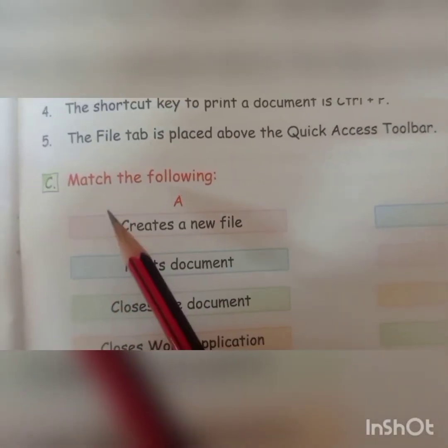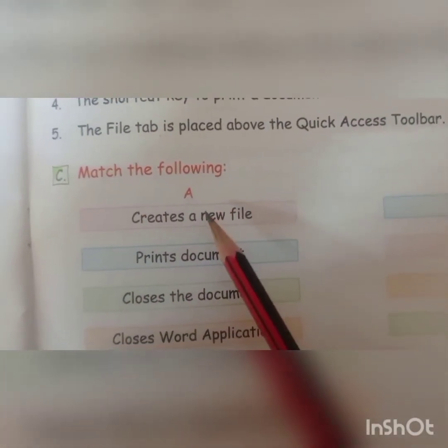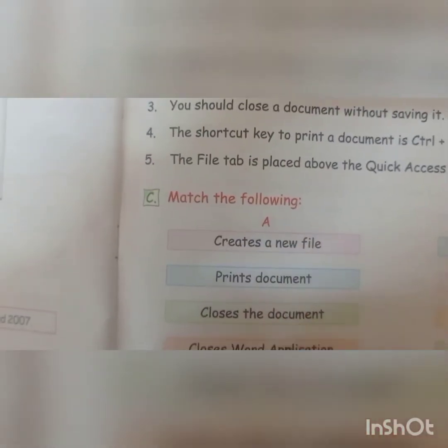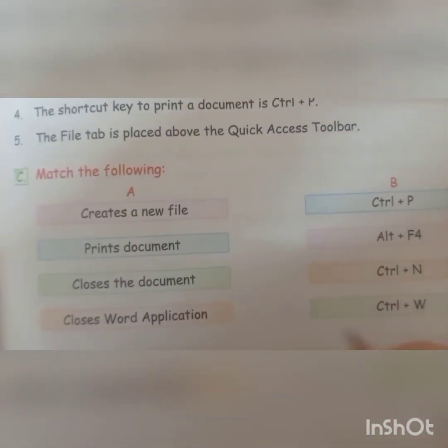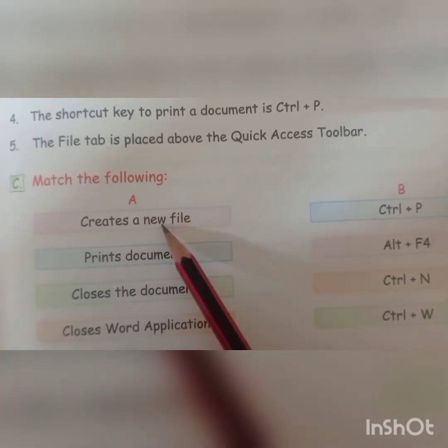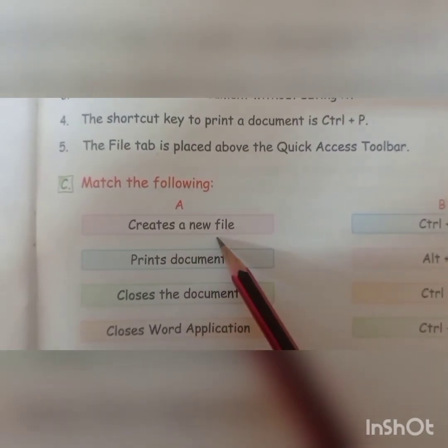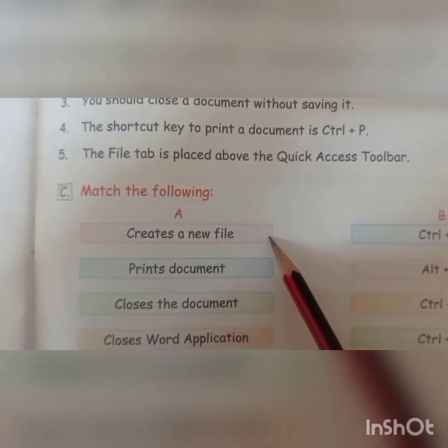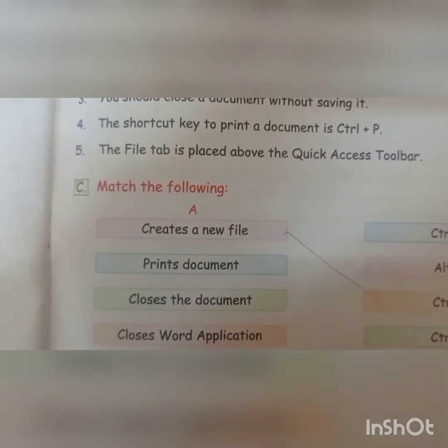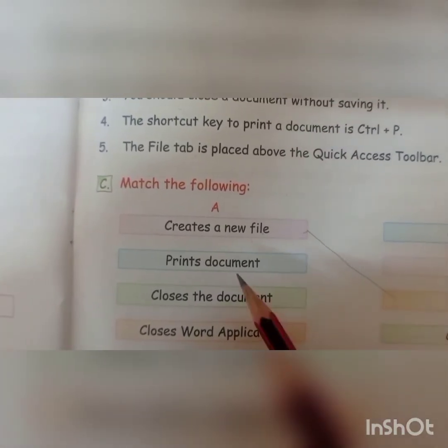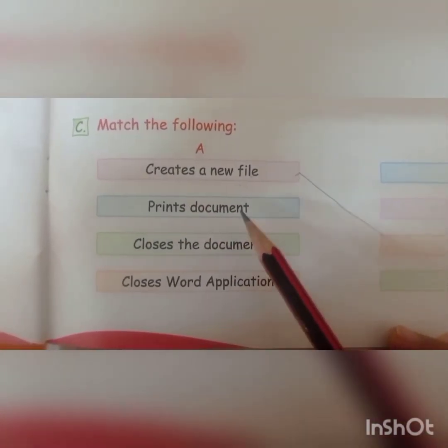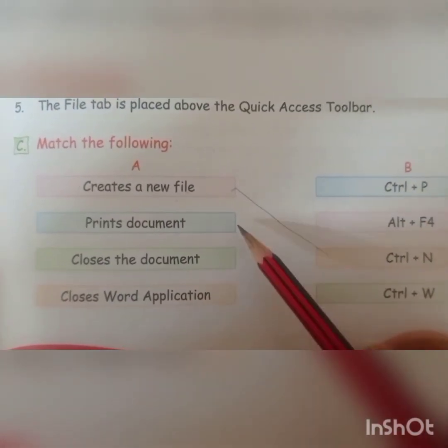Now come to our next exercise: match the following, Section A and Section B. 'Creates a new file' — tell me, what is the shortcut key? Very good — Control+N. This is the shortcut key for creating a new file. Next: 'prints document' — which shortcut key will you use? Yes, Control+P. Very good.